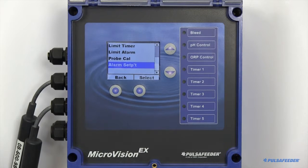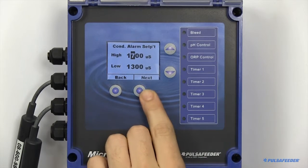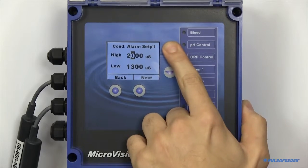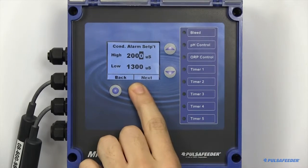High and low alarms can also be configured. These are values which, if the reading goes beyond, will trigger an alarm.